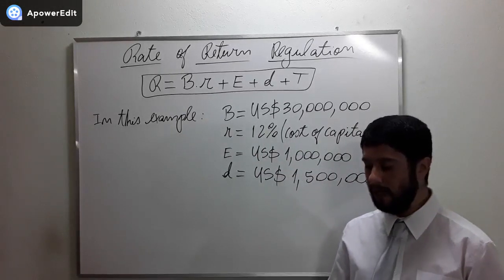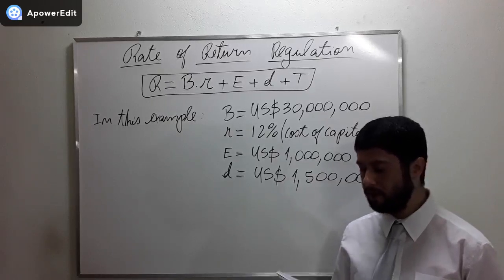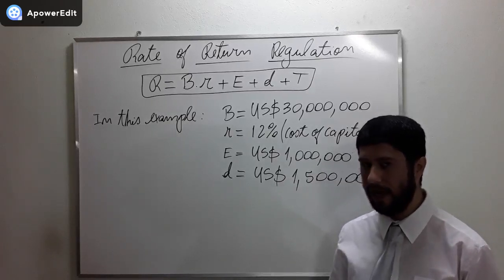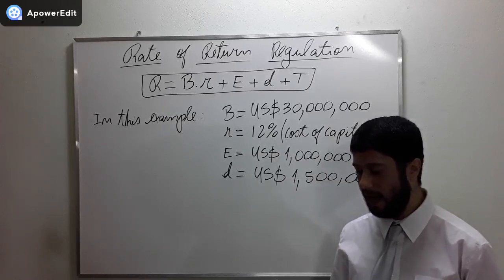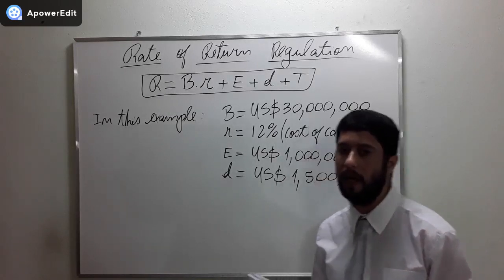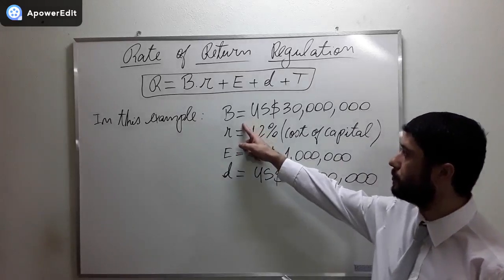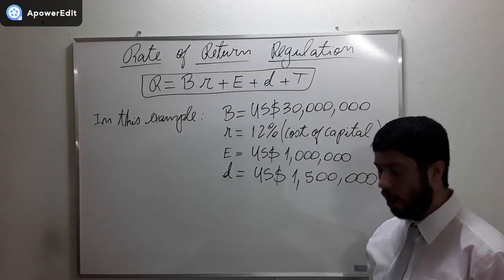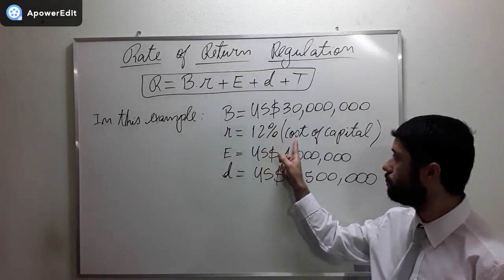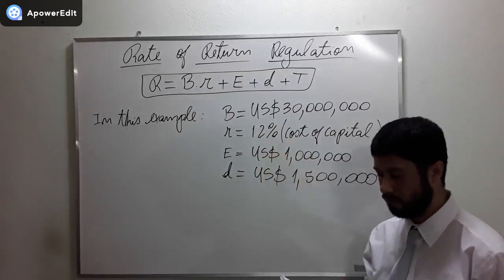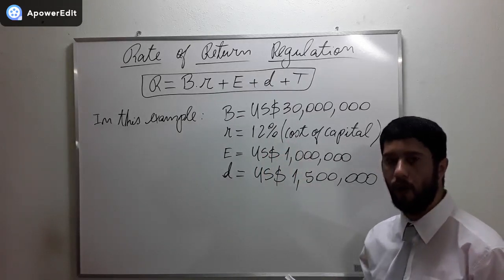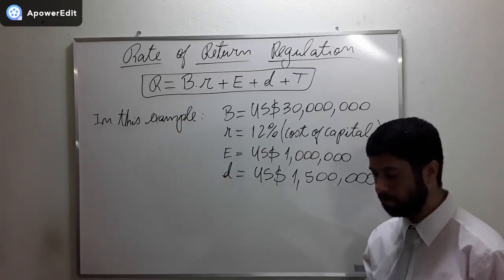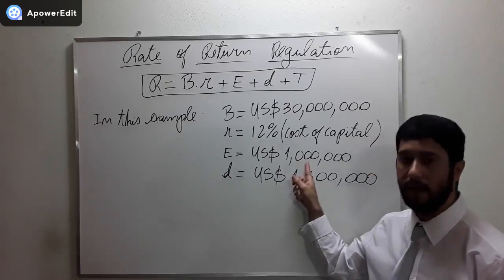Assume that the regulator determines that the company has a net asset base of $30 million USD and an after-tax cost of capital of 12%, a tax rate of 25%.